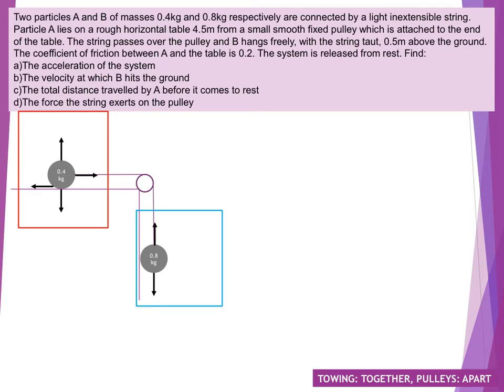In this example we've again got a pulley system, but they're not both travelling vertically. One's travelling horizontally along a table this time, which happens to be a rough horizontal table, so we're going to have to consider friction as well. And the other one is hanging down, so we're just going to be dealing with weight and therefore gravity there.